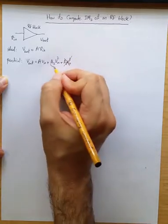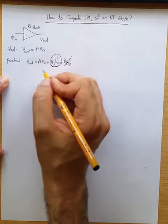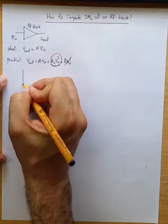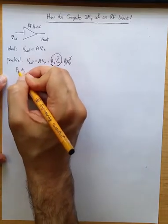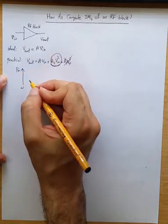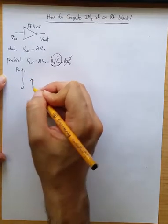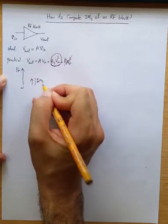Forget about this component for now, let's focus on this guy which is the second order non-linearity of RF block. We want to be able to get an idea or approximation of if we apply a tone like this at frequency omega with power P_in, what happens to the power of second order intermodulation product or IM2 like this?